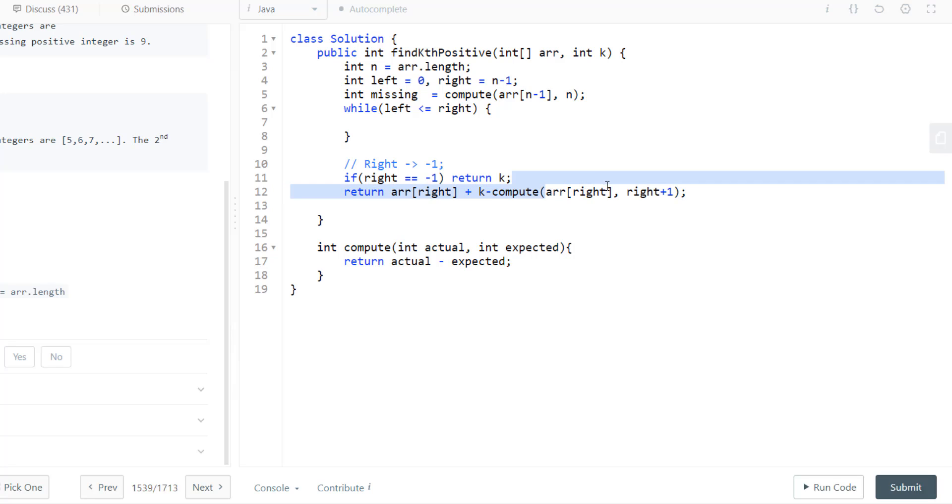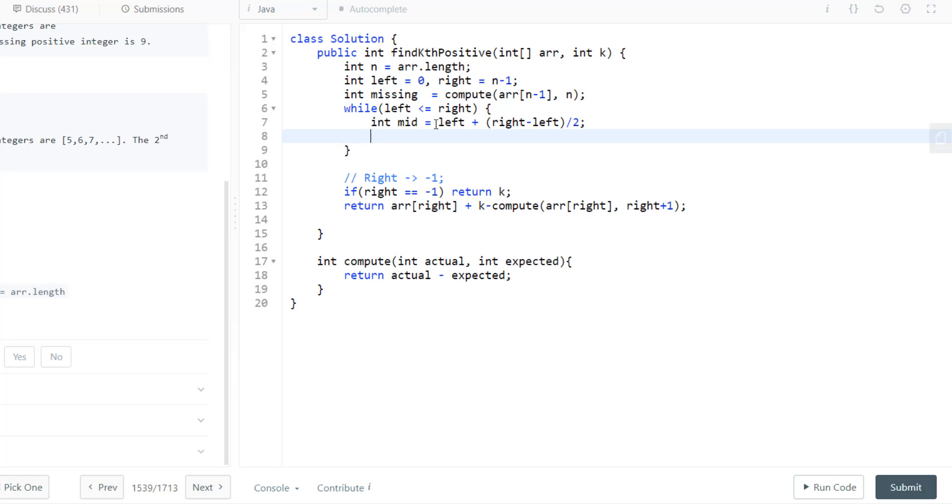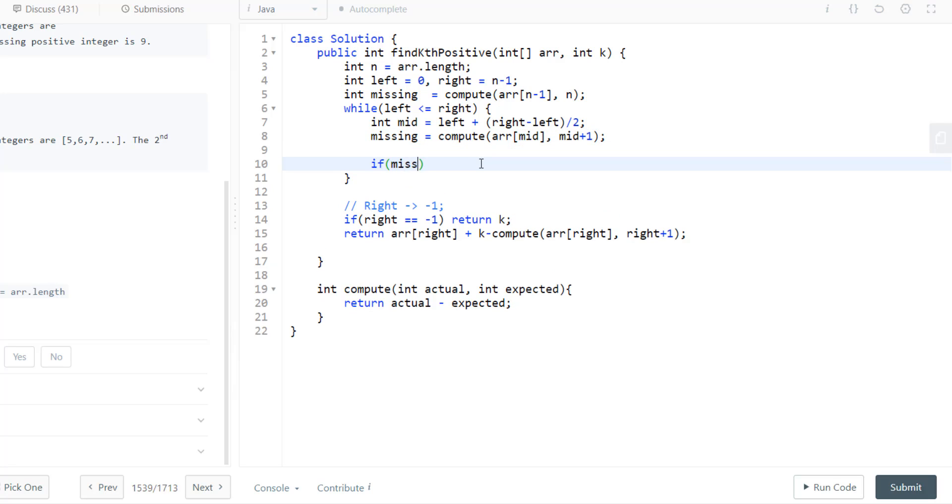In here, first thing we do is calculate mid. So mid becomes left plus (right minus left) by 2. Then we compute missing till mid, which becomes the element at mid minus mid plus 1.